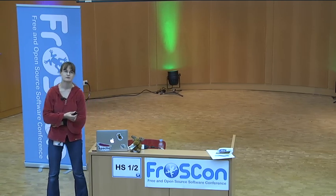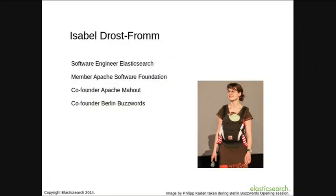I happen to be working for Elasticsearch. Apart from that, I'm a member of the Apache Software Foundation, co-founder of Apache Mood, which does machine learning, and co-founder of Berlin Buzzwords, a conference on search, scale, and store in Berlin. I've spent the past couple of years in companies that do search — first four years in a consultancy doing search applications for German publishers, then two years at Nokia Maps, and now with Elasticsearch. A repeating question always was how to find out whether the search box is actually working and how to convince both customers and your manager what the real problems are.